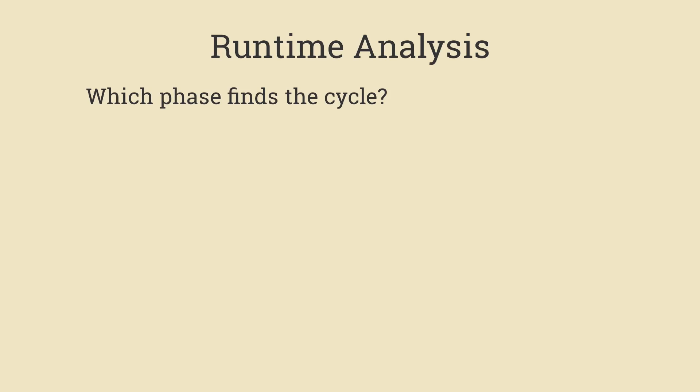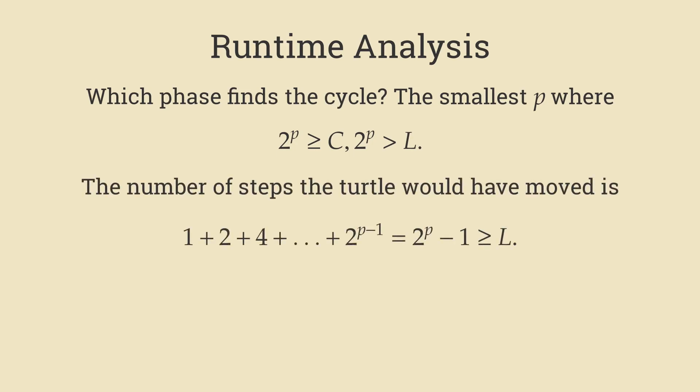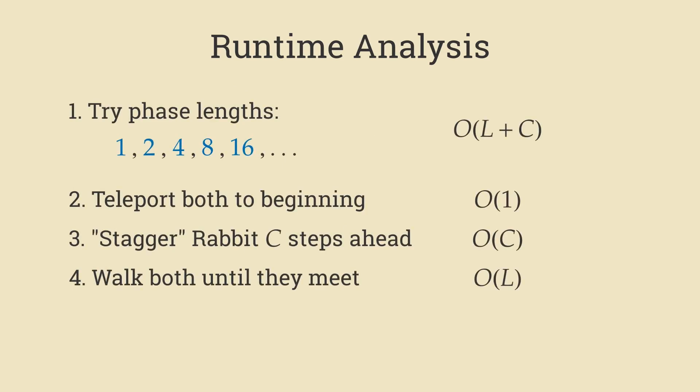The tricky part about Brent's algorithm is showing that it runs efficiently. The main question to answer is, which phase actually finds the cycle? Well, it's the power of 2 satisfying these two inequalities. Hopefully the first one should be pretty straightforward, but what about the second one? Well, in all those previous phases, the turtle has been teleporting forward. And what we need to show is that it's actually now standing on the cycle. Here we can use the formula for geometric series, and we get this expression right here. We can actually reuse this formula when talking about the total number of moves. I'm going to skip the calculations here, but you can show that it's big O of 2 to the p for the number of times the characters move. 2 to the p is big O of the bigger of these two expressions. One of the identities that you learn is that big O of the sum of two things is exactly the same as the big O of the max of the two things. The rest of the steps are pretty straightforward to calculate, and we see that the total runtime is big O of L plus C.